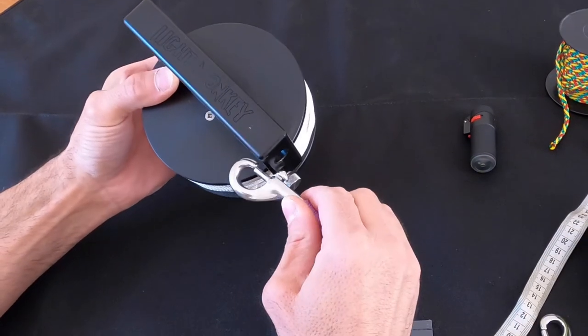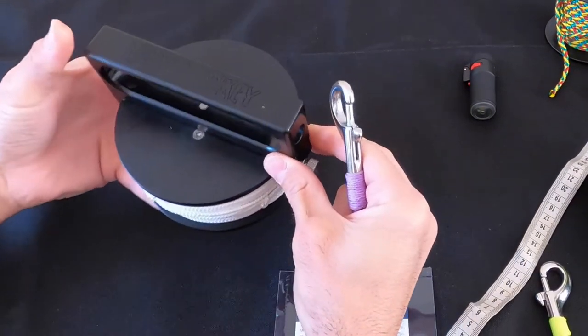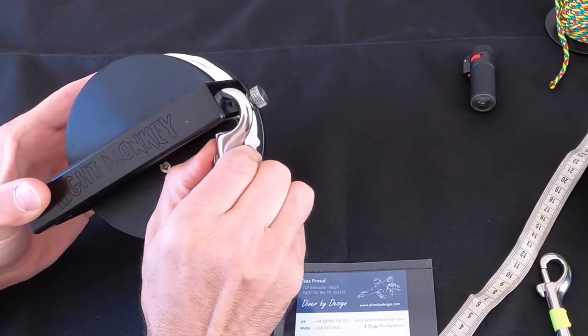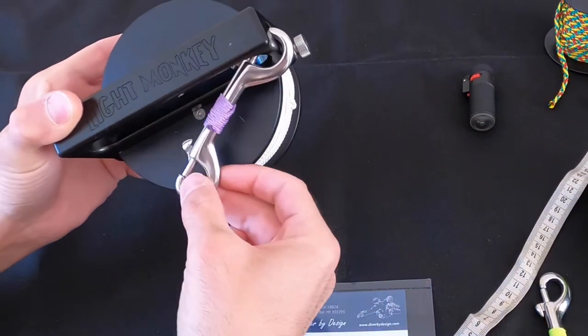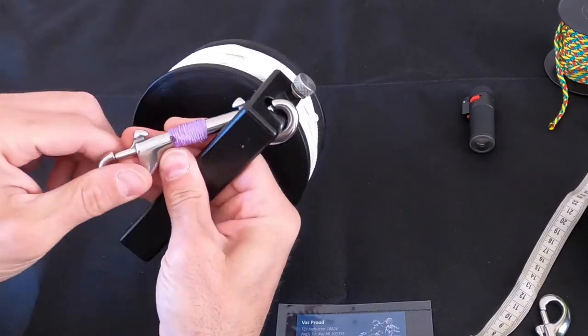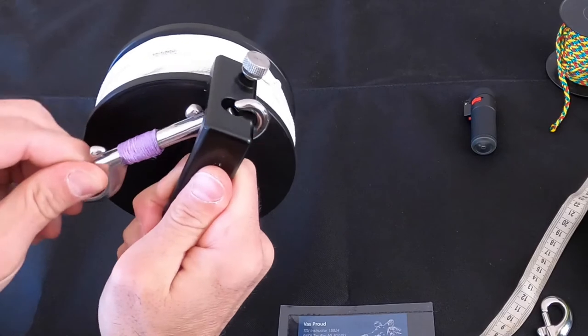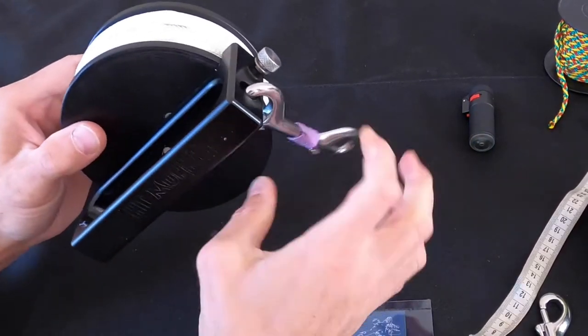So you actually have to come and clip the double ender from the top down. Now what happens is that as you rotate it, there really isn't any way easily for this to come off. You've got to work pretty hard for that to come off.